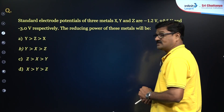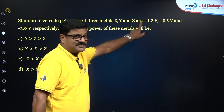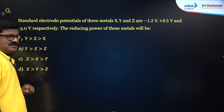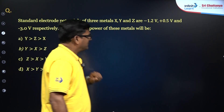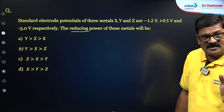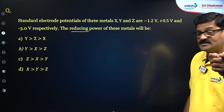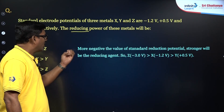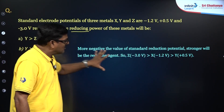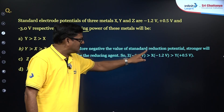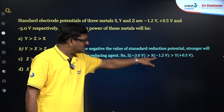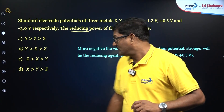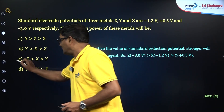Standard electrode potentials of three metals X, Y, Z are minus 1.2 volts, plus 0.5 volts, and minus 3.0 volts respectively. The reducing power of these metals will be? As discussed, the more negative the value of standard reduction potential, the stronger the reducing agent. Arranging: minus 3.0 is greater than minus 1.2 is greater than plus 0.5, so Z > X > Y. Option C is the correct answer.